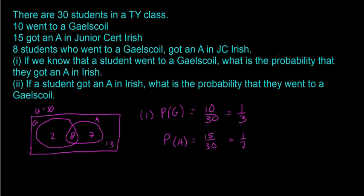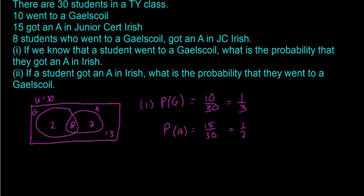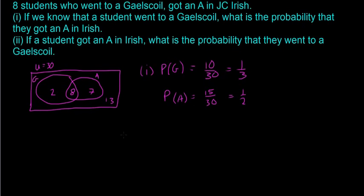So if we know that a student went to a Gaelscoil, what is the probability they got an A in Irish? I'll change to green for this. Scroll down a little bit. So we want to know P of, so given they went to a Gaelscoil, the probability of getting an A. So P of A, line G.